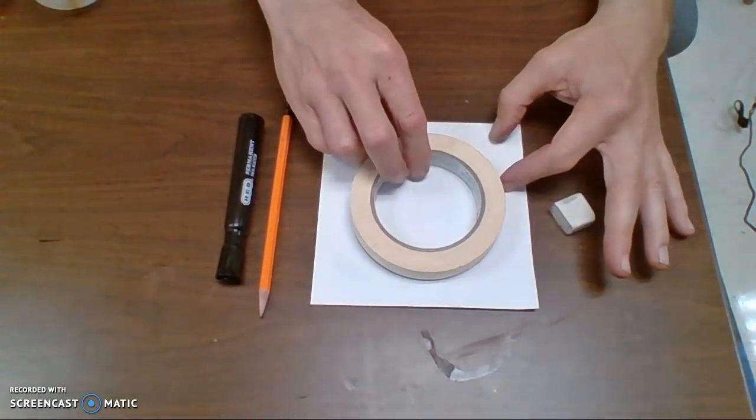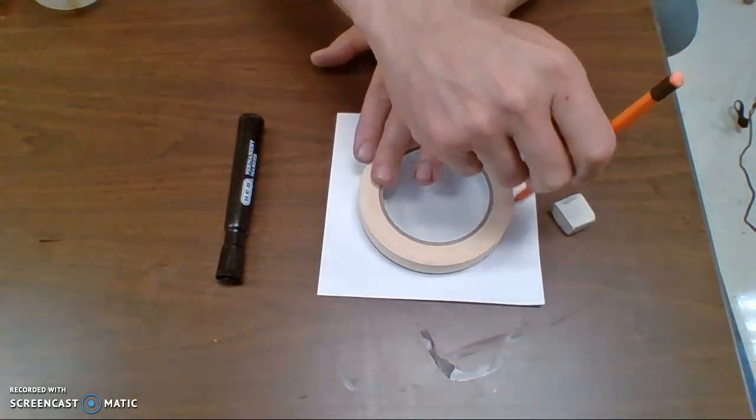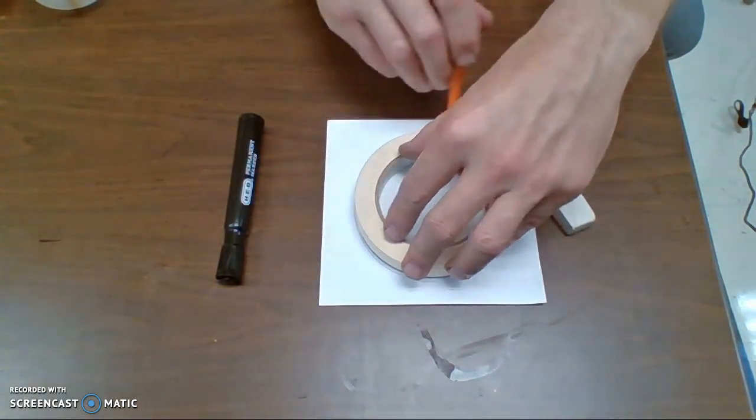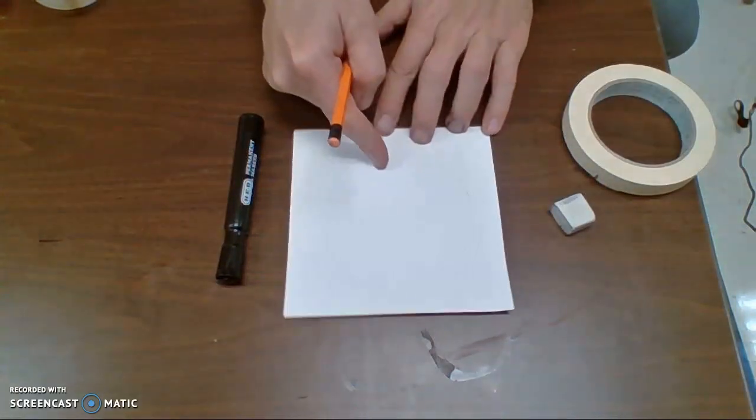First, I'm just going to put this on top of my square paper, and then with a pencil, I'm going to trace my circle. That's it. That was pretty simple. I take this out, and now I've got a nice circle.